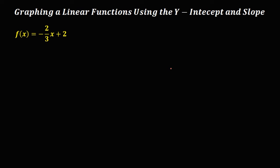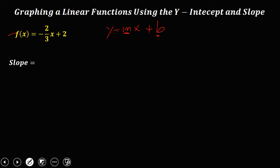Using the slope formula, that's y equals mx plus b. So m is the slope and b is the y-intercept. From this given function, the slope is negative 2 over 3, and for the y-intercept, y is equal to positive 2.